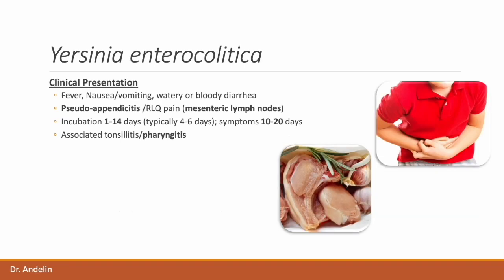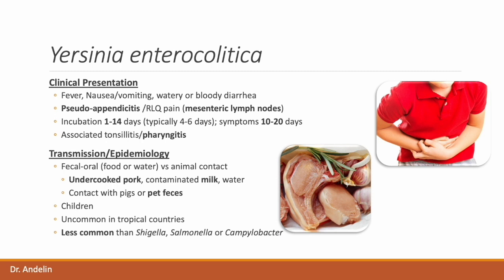Similar to other cases, Yersinia can cause fever, nausea, and vomiting with watery or bloody diarrhea. Yersinia can affect the mesenteric lymph nodes leading to severe right lower quadrant abdominal pain that mimics appendicitis — sometimes called pseudo-appendicitis. The incubation period tends to be a bit longer, up to 14 days, with symptoms also lasting up to 10–20 days. This can involve the lymphoid tissue including tonsils, leading to sore throat with tonsillitis or pharyngitis. Yersinia is spread through fecal-oral route, most commonly through undercooked pork but also through contaminated milk, water, or direct contact with pigs. It tends to be more severe in children and is uncommon in tropical countries.